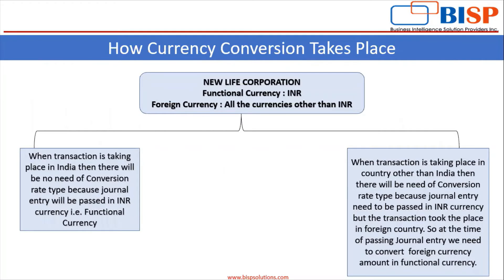How does currency conversion take place? In the given picture, you can see we have a company, New Life Corporation. Its functional currency is INR and foreign currency refers to all currencies other than INR. When a transaction takes place in India, there will be no need for a conversion rate type because the journal entry will be passed in INR, which is the functional currency. But when a transaction takes place in foreign currency, at the time of passing the journal entry, we need to convert the foreign currency amount into functional currency.